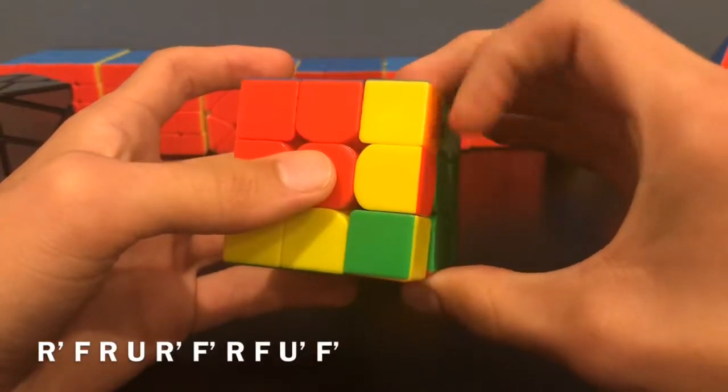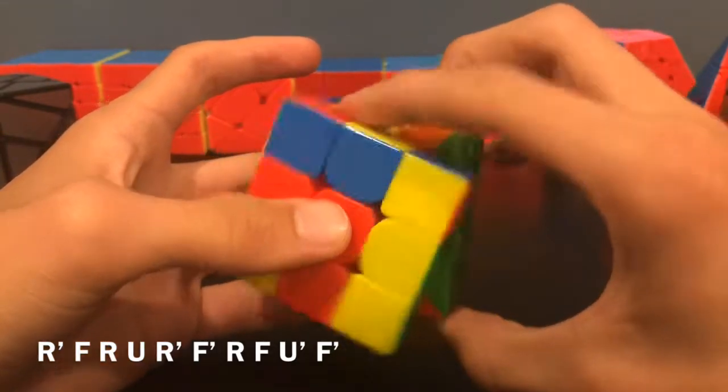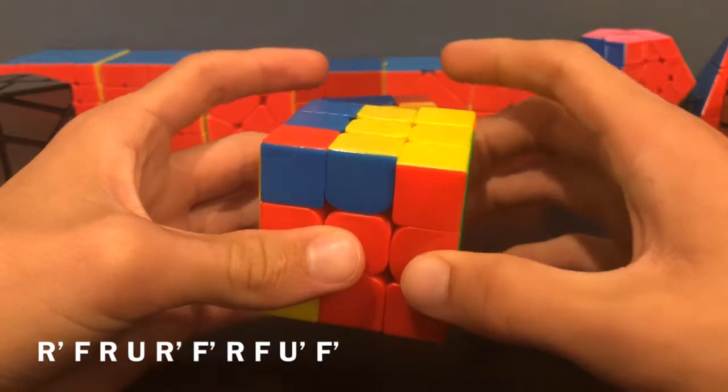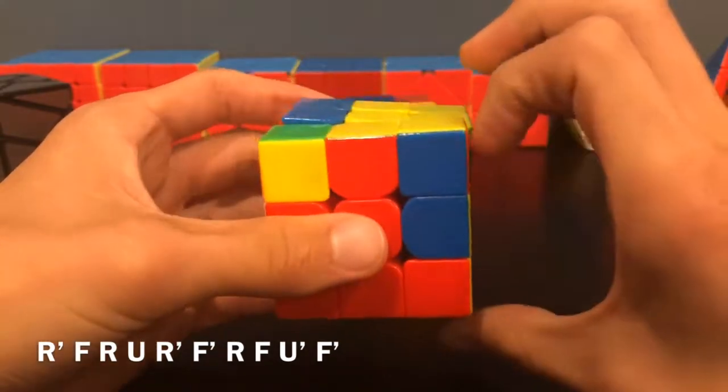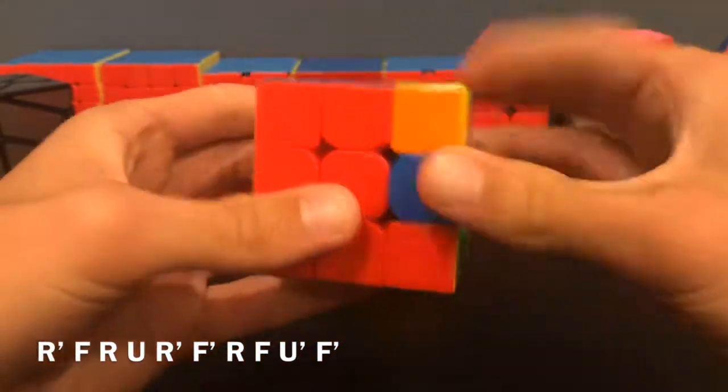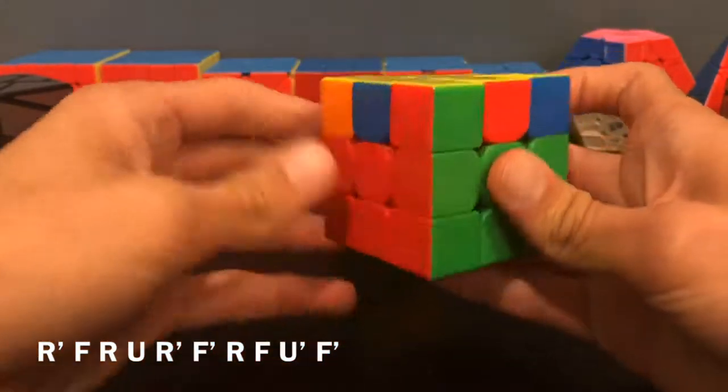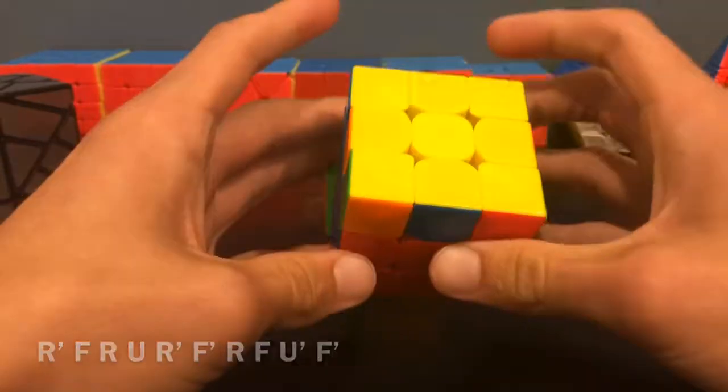R' F R U R' F' R, then F U' F'. For that last one, I normally sort of do a cube turn and go like that just to put the F2L pair in, but you can do it however you want.